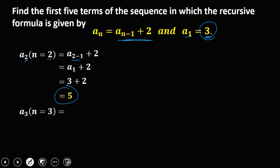Then for a sub 3, n is now equal to 3. Substituting into the formula: a sub 3 minus 1 plus 2, and 3 minus 1 gives a sub 2 plus 2. Substituting the value of a sub 2, which is 5, then plus 2, so a sub 3 is 7.